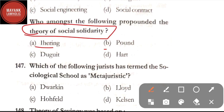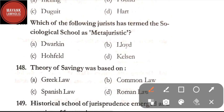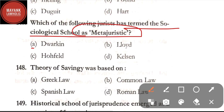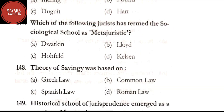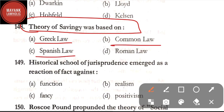Question number 146: who among the following propounded the theory of social solidarity — option A: Ihering; option B: Pound; option C: Duguit; option D: Hart. The correct answer is option C, Duguit. Question number 147: which of the following jurists has termed the sociological school as meta-juristic — option A: Dworkin; option B: Lloyd; option C: Hofield; option D: Kelsen. The correct answer is option D, Kelsen.